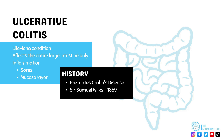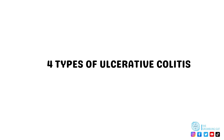Interestingly and historically, ulcerative colitis predates Crohn's disease, with cases being described as far back as ancient Greek times. However, it wasn't until 1859 that ulcerative colitis was described as a specific disease by Sir Samuel Wilks. There are four types of ulcerative colitis, dependent on which part of the large intestine has inflammation.